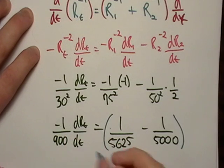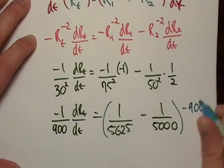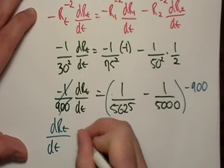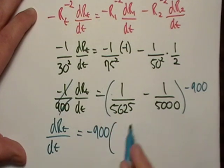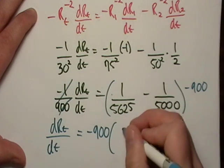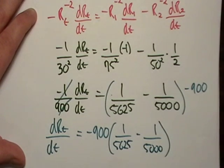So, the next thing I'm going to do here is I'm going to divide both sides by 1 over 900. I'm going to put a parenthesis in here. So, if I divide both of these by 1 over 900, I'm going to end up with negative 900 over here. That's going to cancel out. So, dRe dT is equal to negative 900. And then it's just going to be... I'm just going to write it out. And then I'll type it into my calculator. In fact, that's what they're there for, right? So, negative 900 times the quantity 1 over 5625 minus 1 over 5000 to the negative 1.